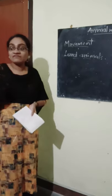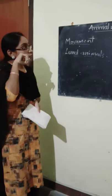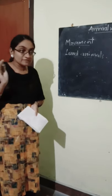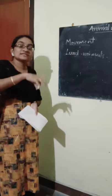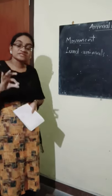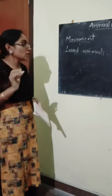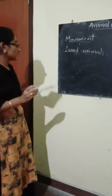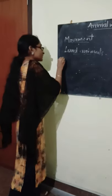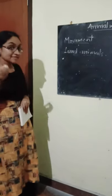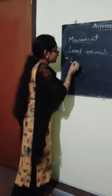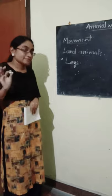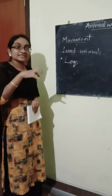Do all these animals have the same movement organ? No. For human beings it is different. When we consider lizards, they have another structure for movement. And for snakes, they have no legs. Each and every animal on land has a different type of organ. Generally, these animals are using legs, but they differ in number and structure for different animals.